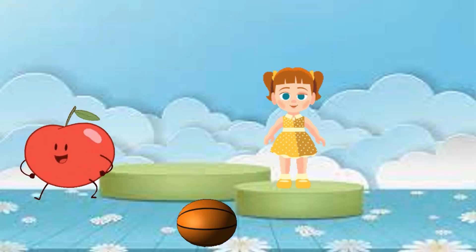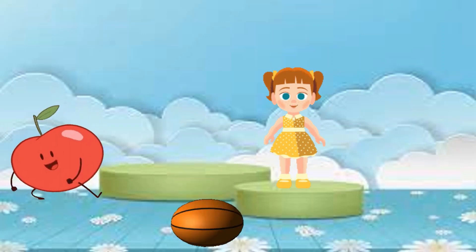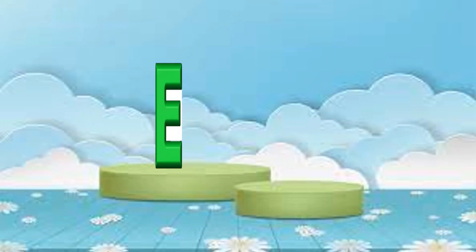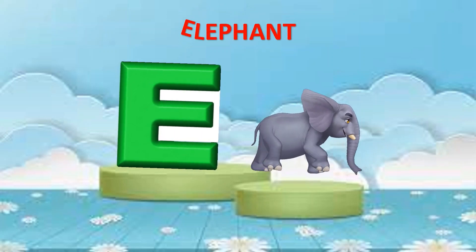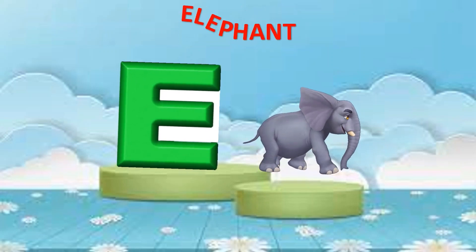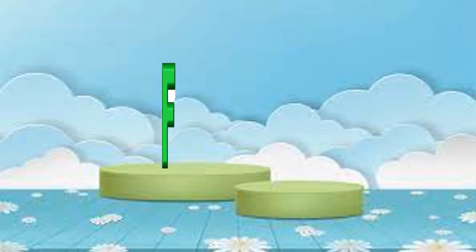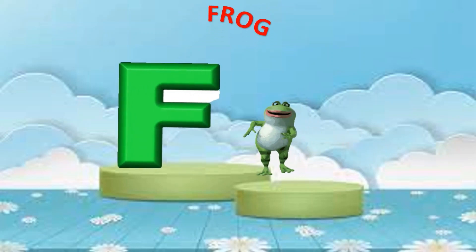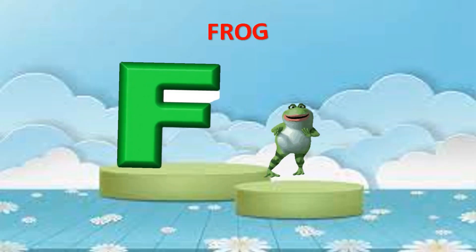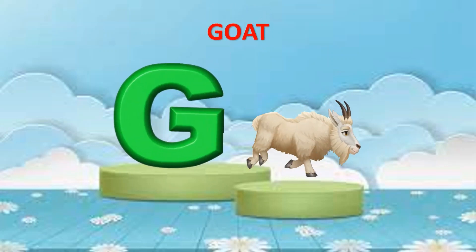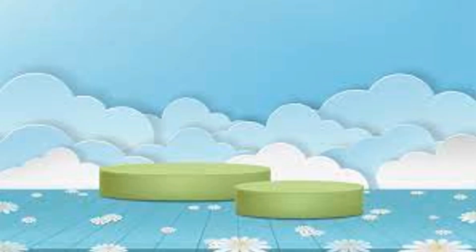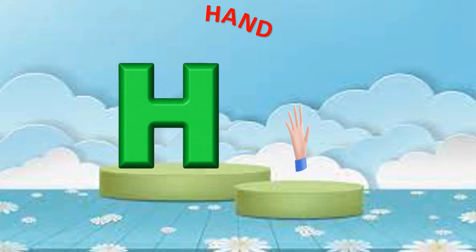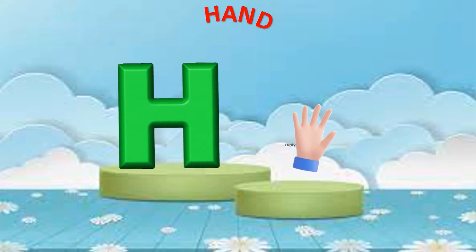E is for elephant, e-e-elephant. F is for frog, f-f-frog. G is for goat, g-g-goat. H is for hand, ha-ha-hand.